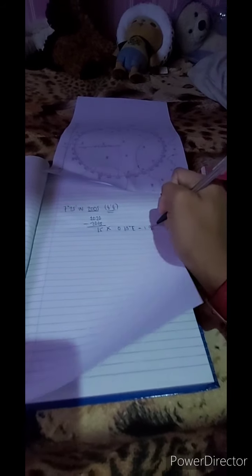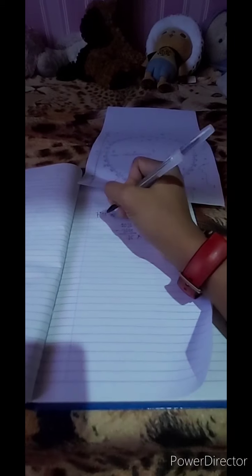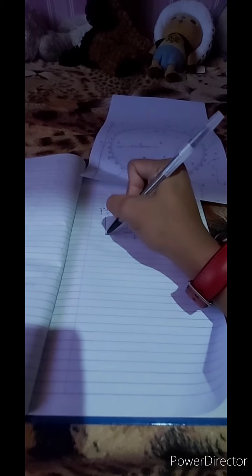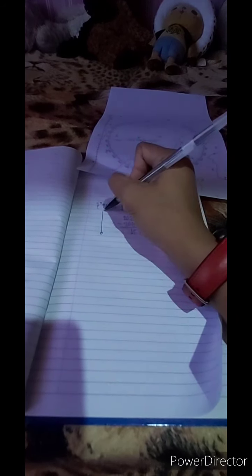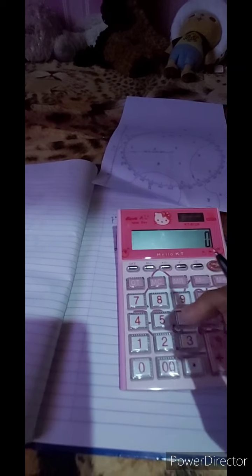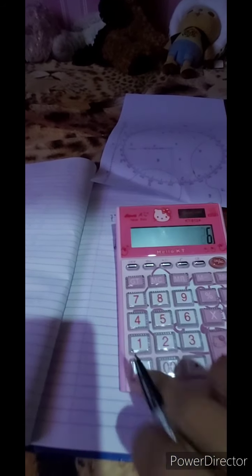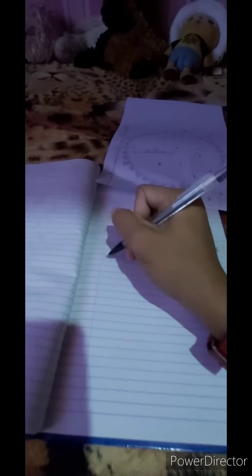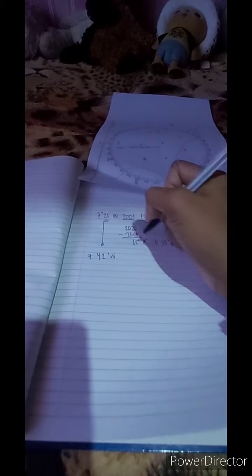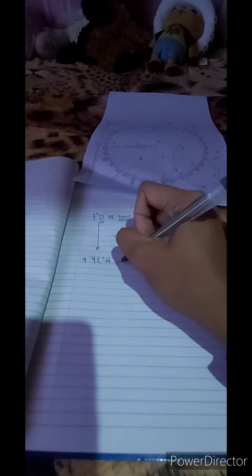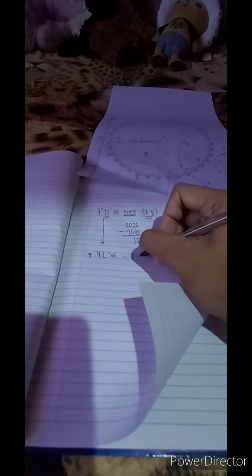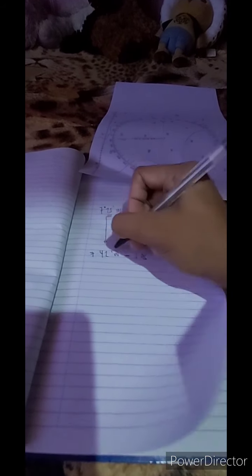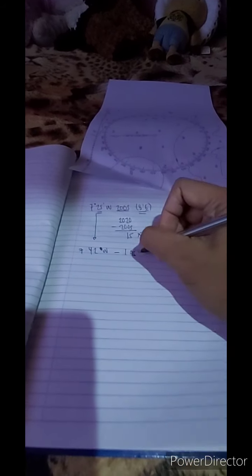Then the 7 degrees 25 minutes west, you bring it down and convert the 25 minutes into degrees. 25 divided by 60 equals 0.42, just round off. So 7.42 degrees west. Then you subtract it from the 1.95 degrees east.